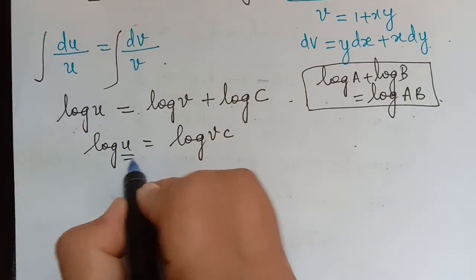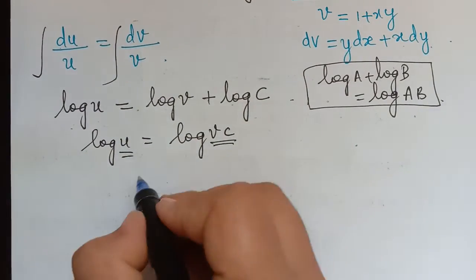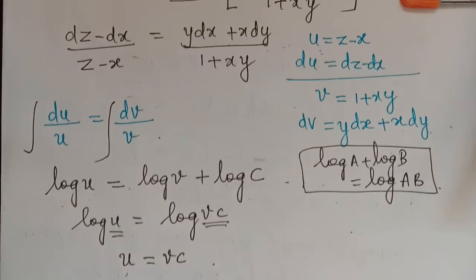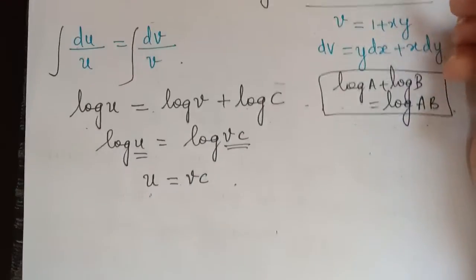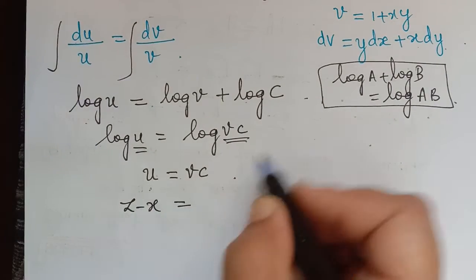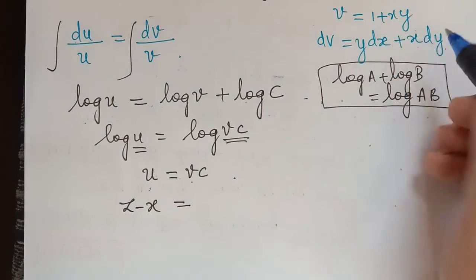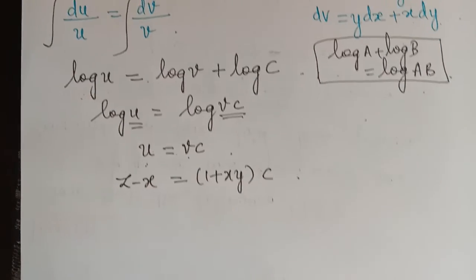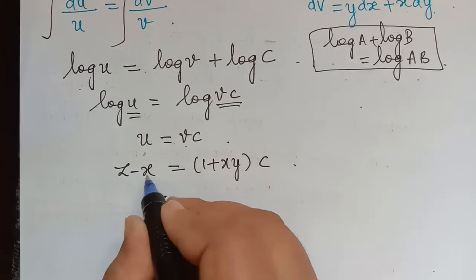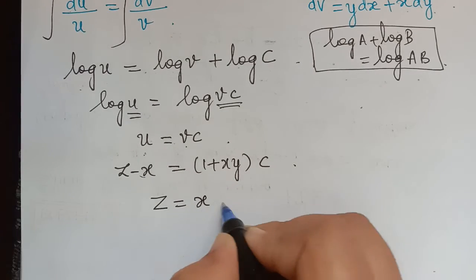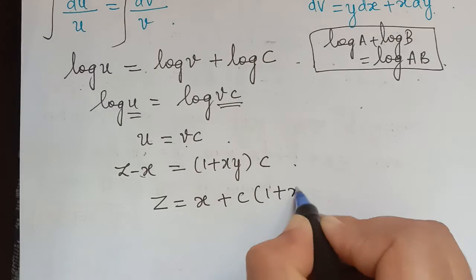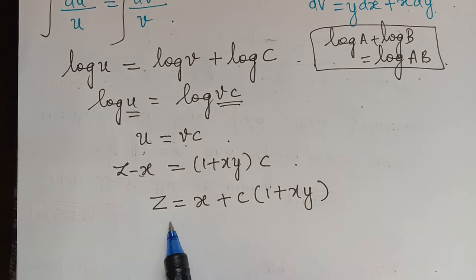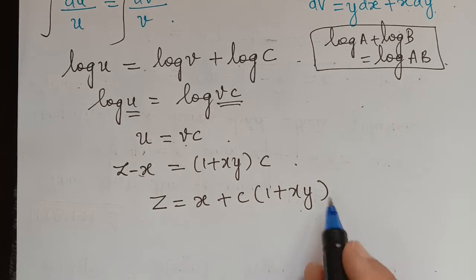From log U = log(VC), we get U = VC. Substituting back: Z minus X = C(1 + XY), and therefore Z = X + C(1 + XY). This is the solution of the given PDE, which is a one-parameter family of solutions.